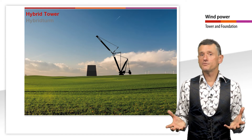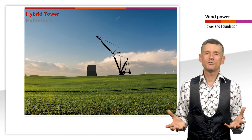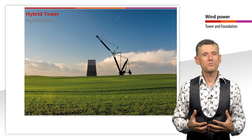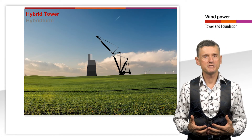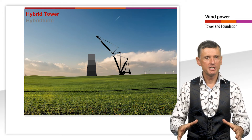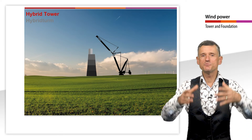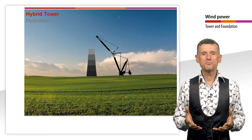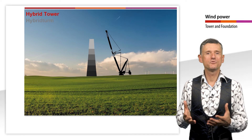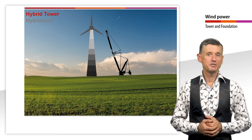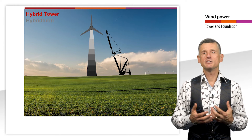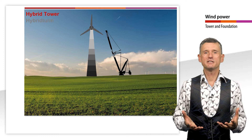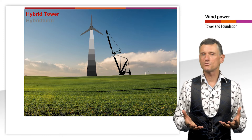Today, one often sees the hybrid construction method. Here, the lower part consists of a concrete structure and the upper part of steel tube segments. The low mass of the upper part of the tower compared to the concrete construction reduces the increase of the tower mass with height and thus leads to cost advantages.